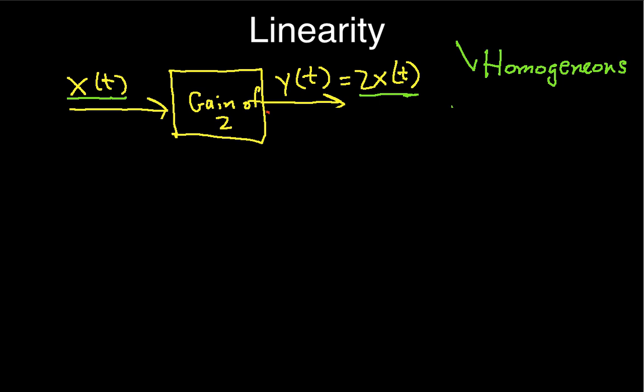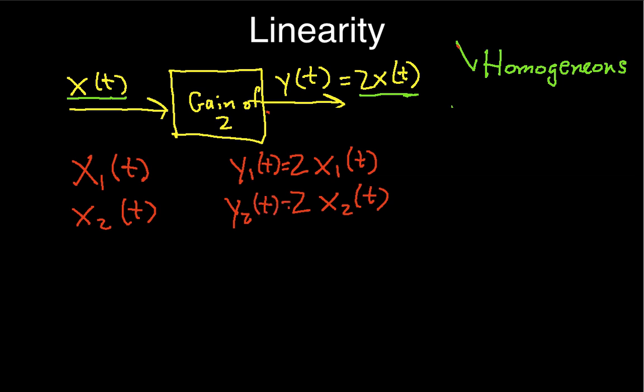So the idea here is we're going to put a signal x1 into the system, and the output of the system is going to be 2 times x1. We'll put a different signal x2 into the system, and the output of the system will be 2 times x2. And we'll call this y1 because this is the response to x1. We'll call this y2 because this is the response to x2.